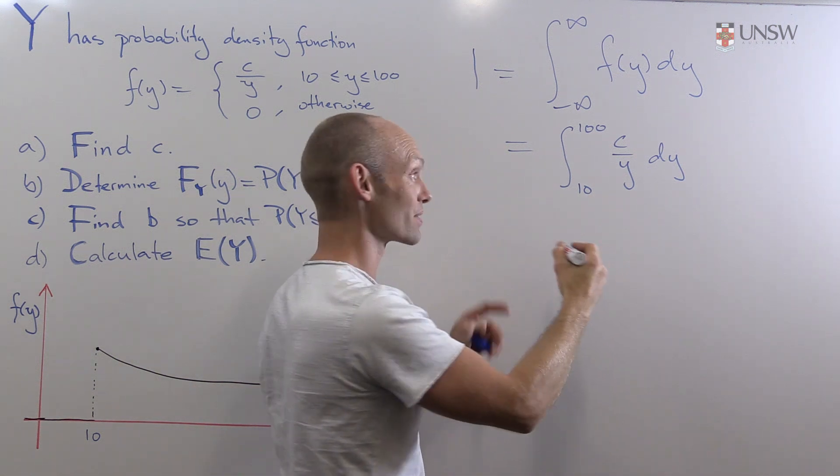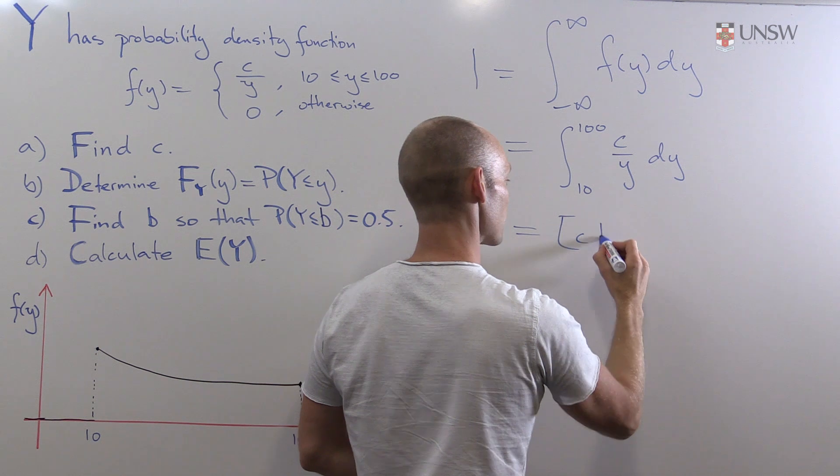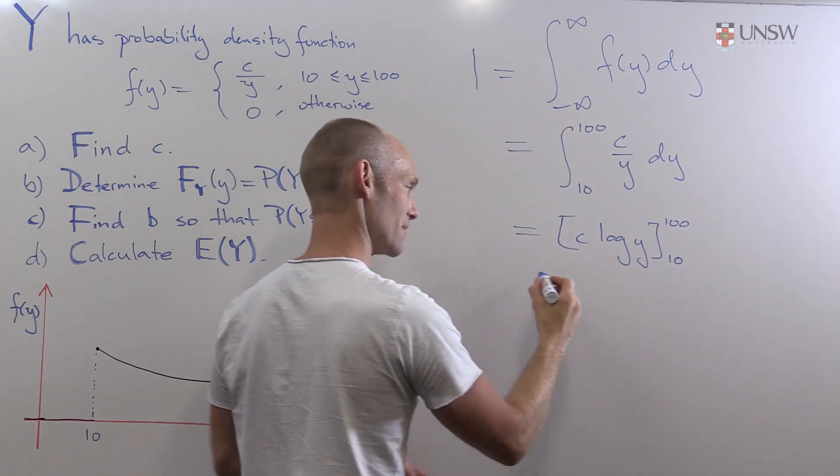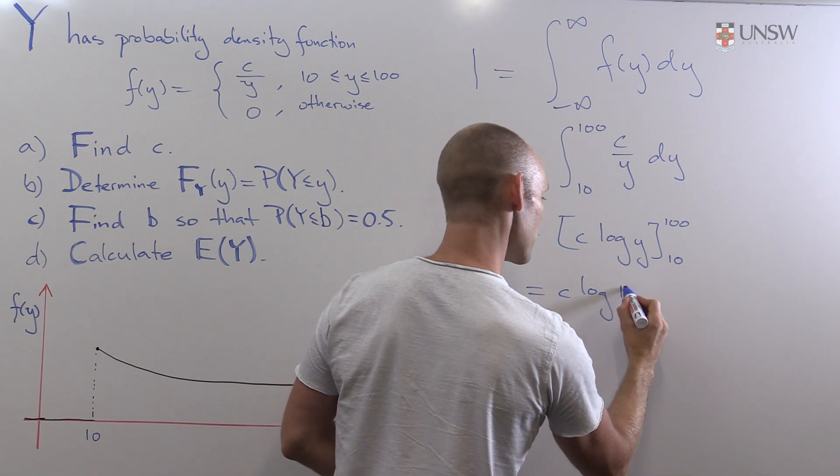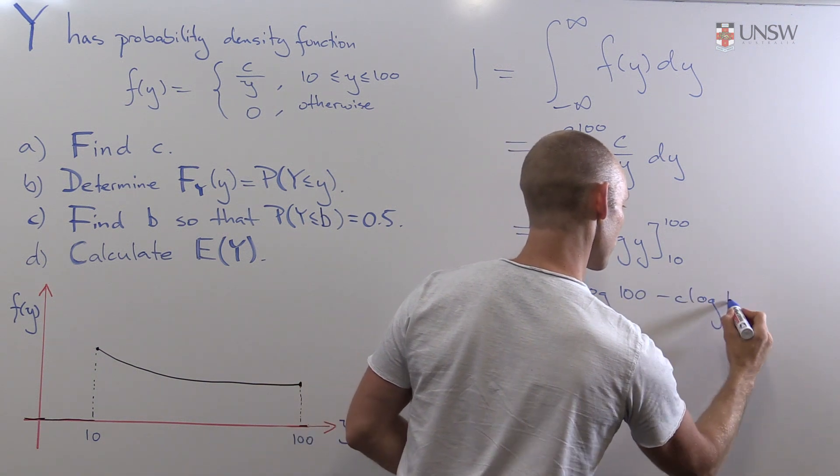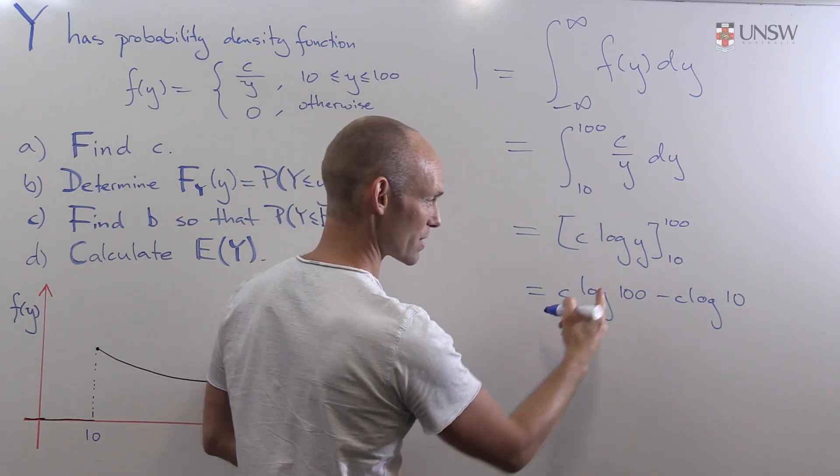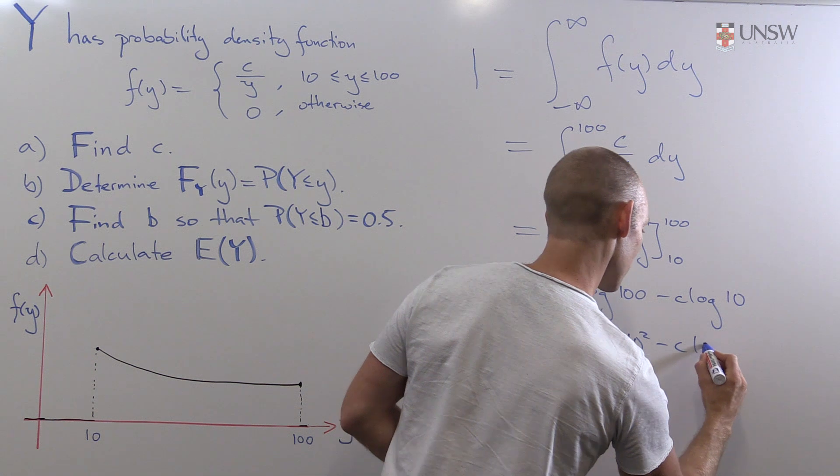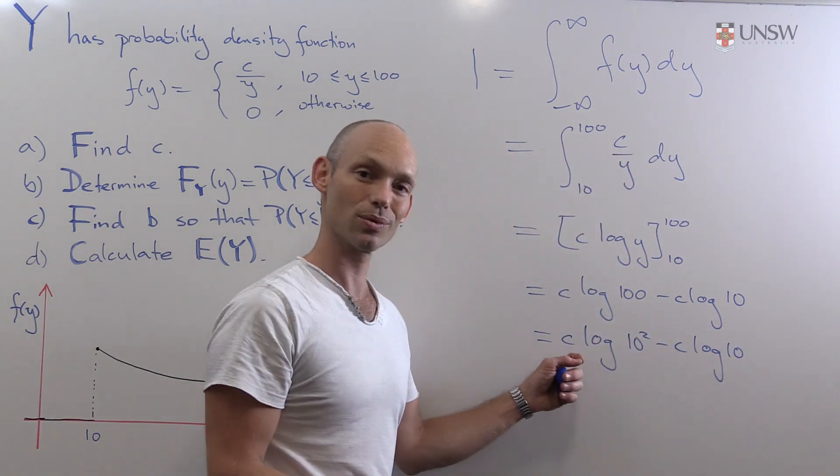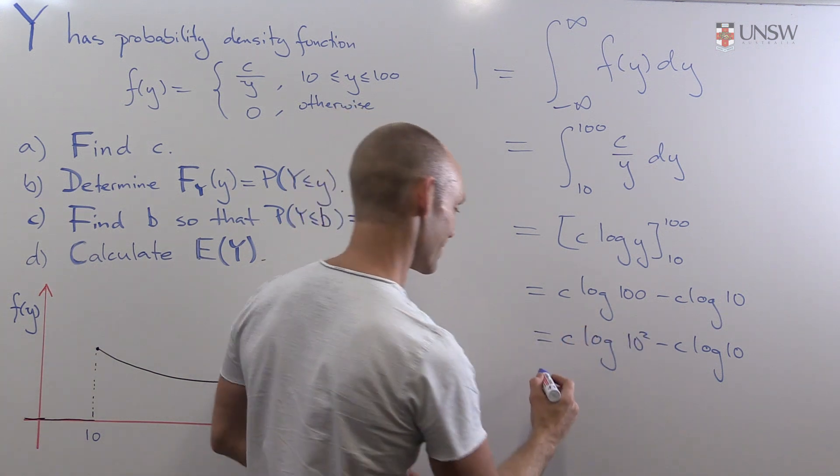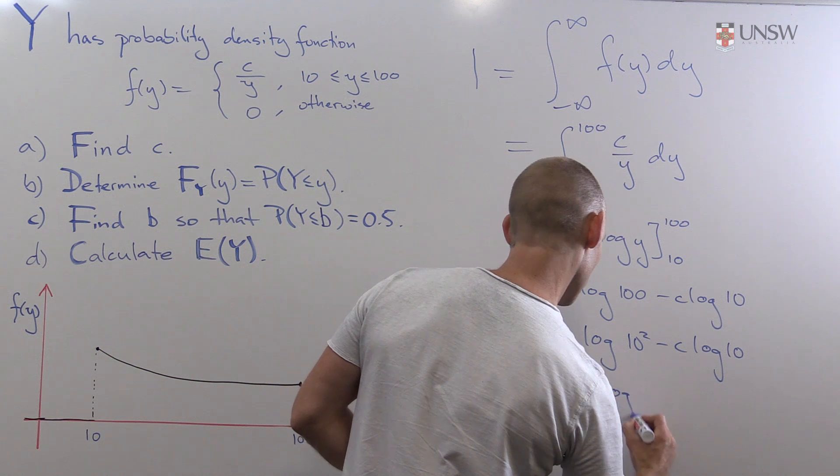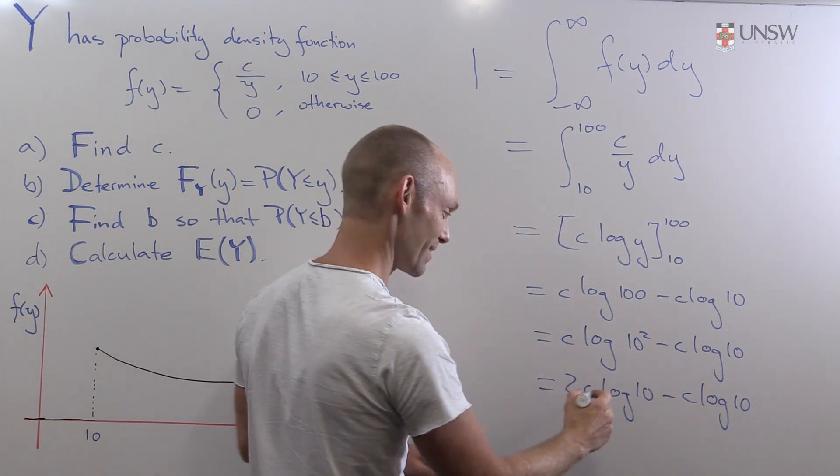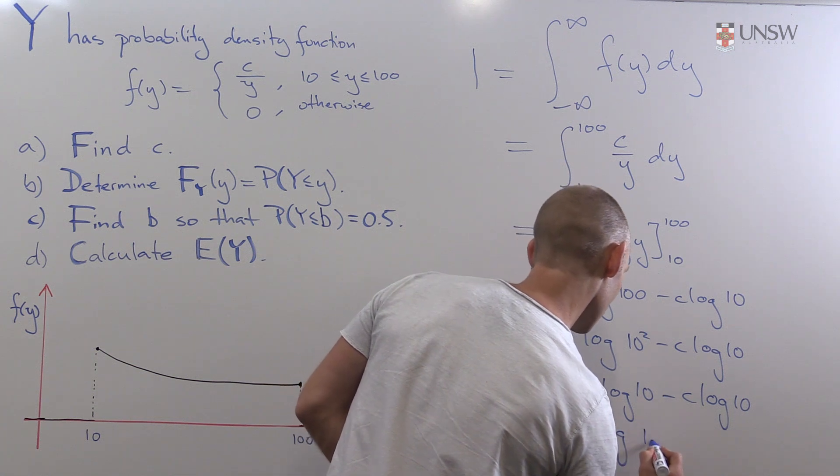And now we just calculate what that's equal to. So this is equal to c times the natural logarithm of y evaluated between 10 and 100. So that's c of the logarithm of 100 minus c times the logarithm of 10. And 100, that's equal to 10 squared. So we get 2c log 10 minus c log 10. So this eats one of these two things, leaving us with c log 10.